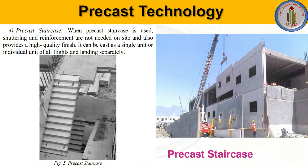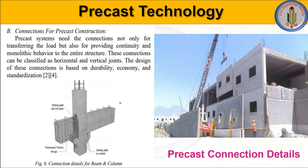Next is the precast staircase. When this kind of staircase is used, shuttering and reinforcement are not needed on site. The stair slabs are precast in the manufacturing unit and we only need to assemble them at site, which provides a high quality finish. It can be cast as a single unit or as individual units of flight and landing separately, according to the specifications of the staircase.